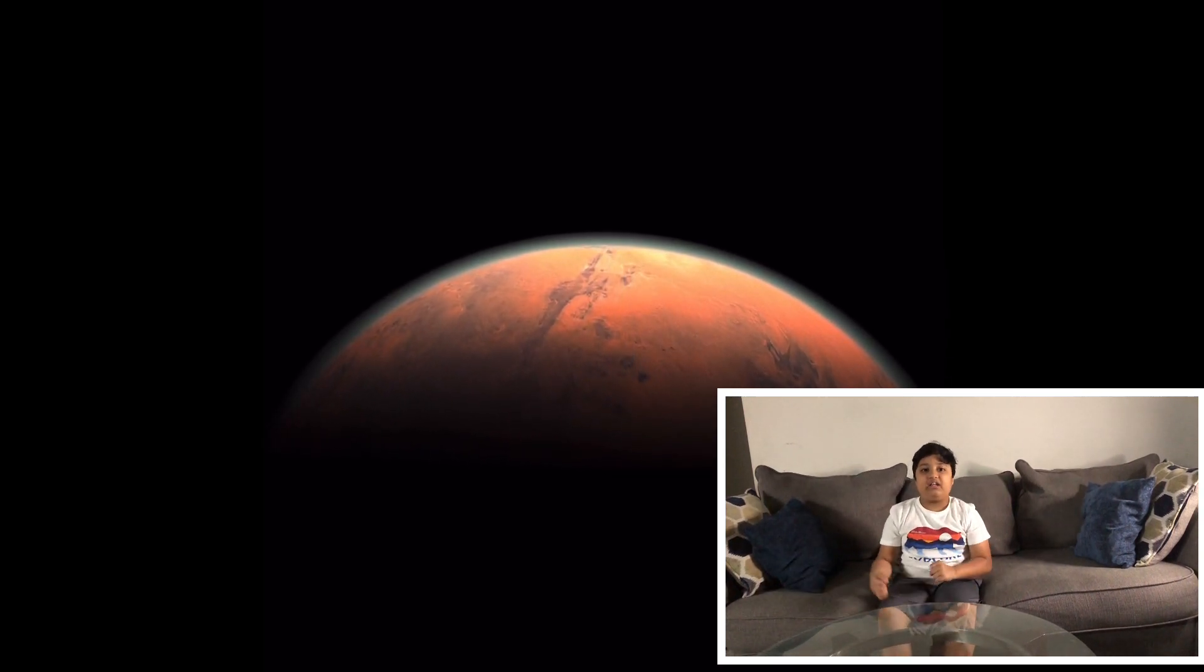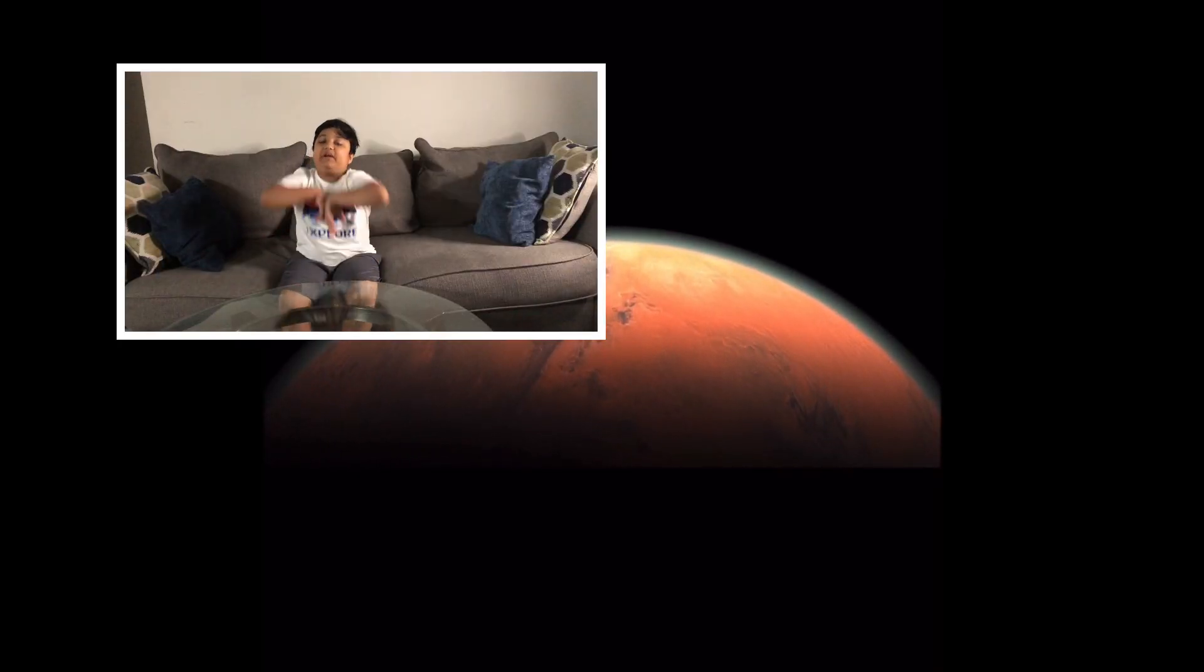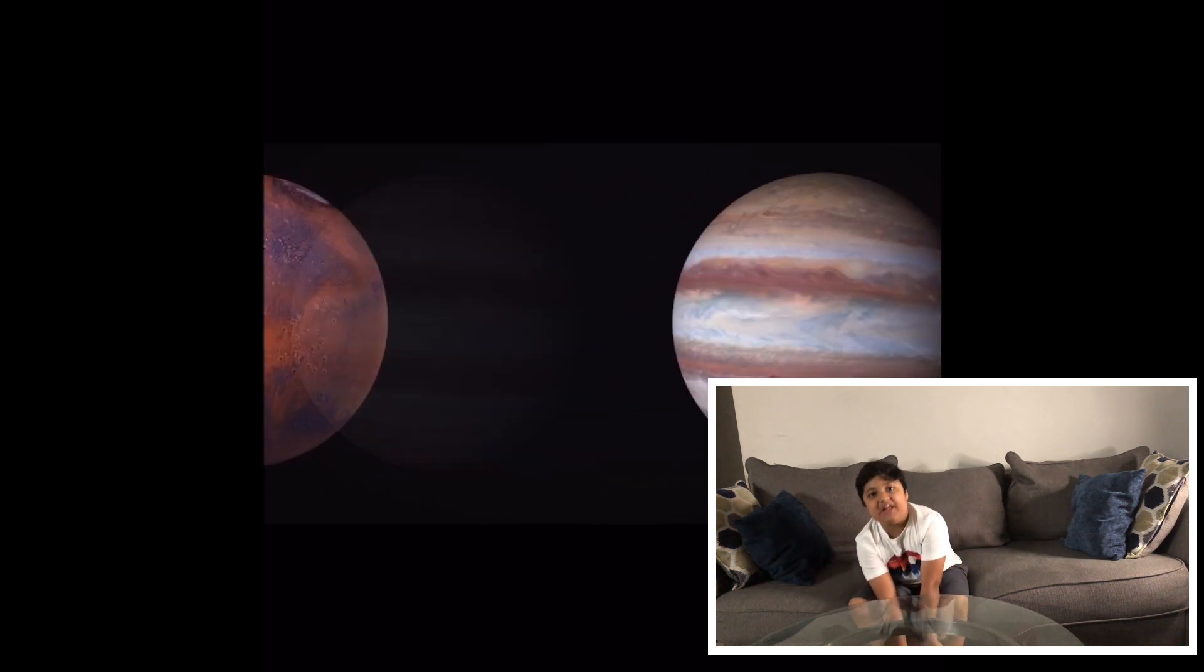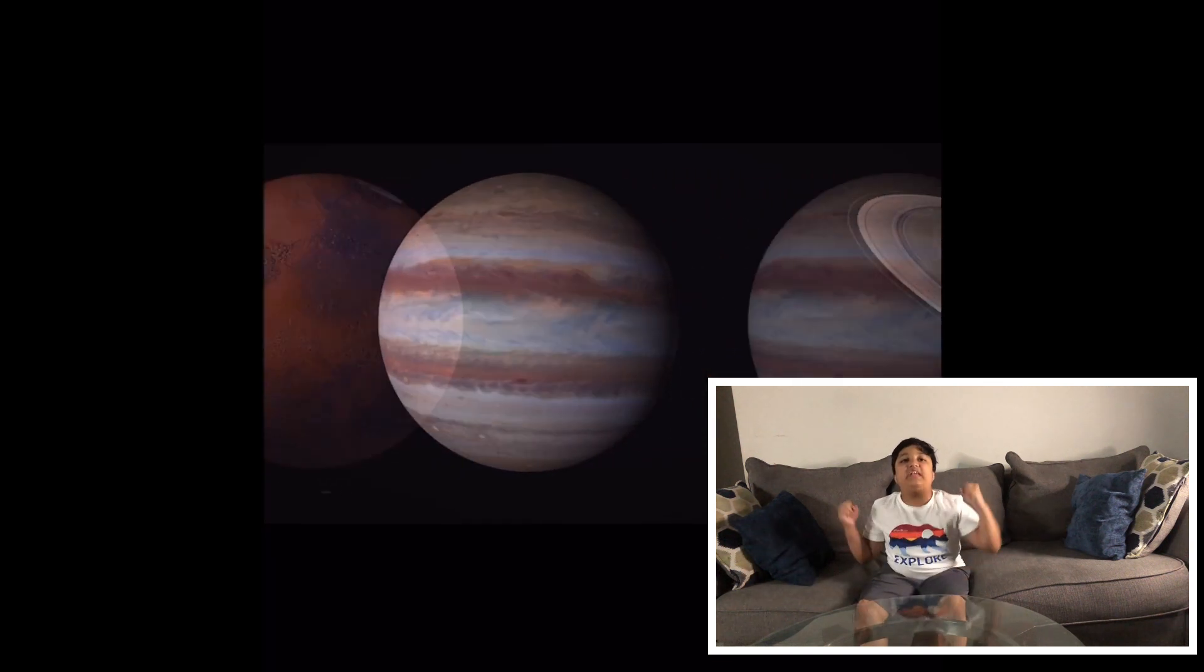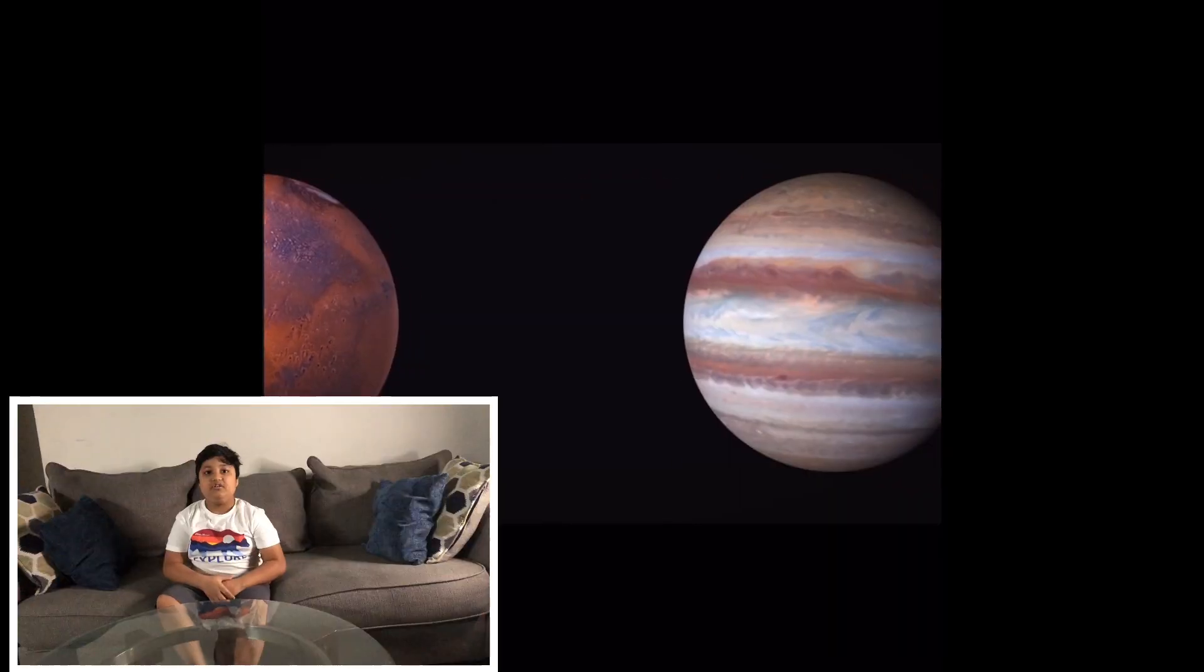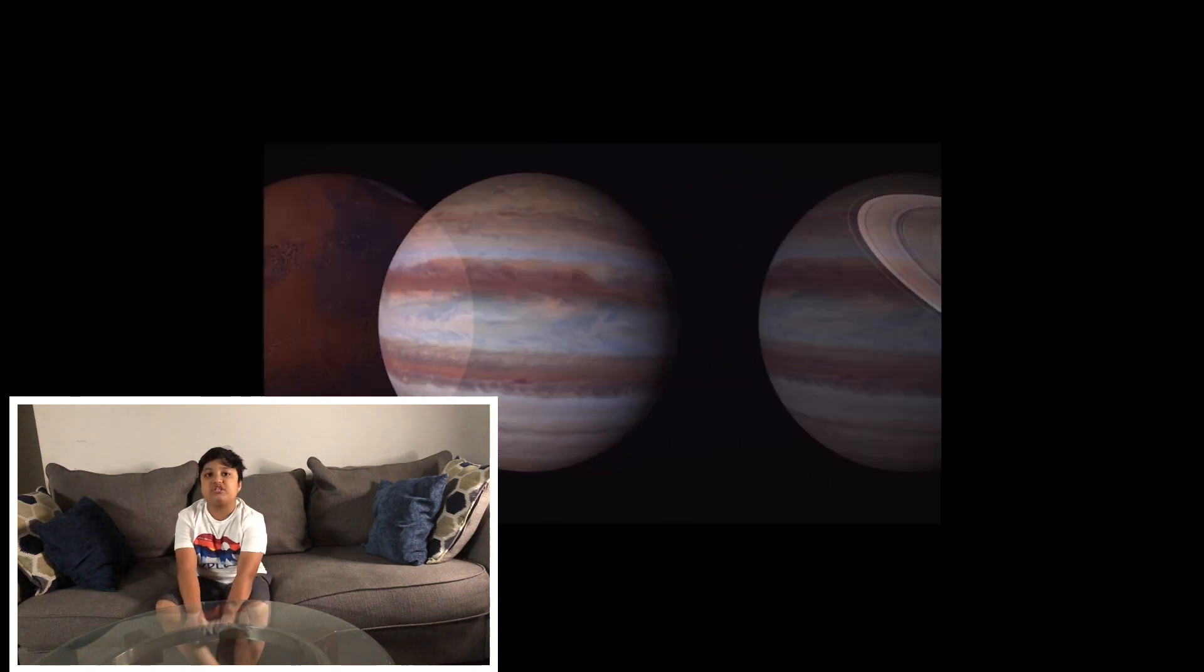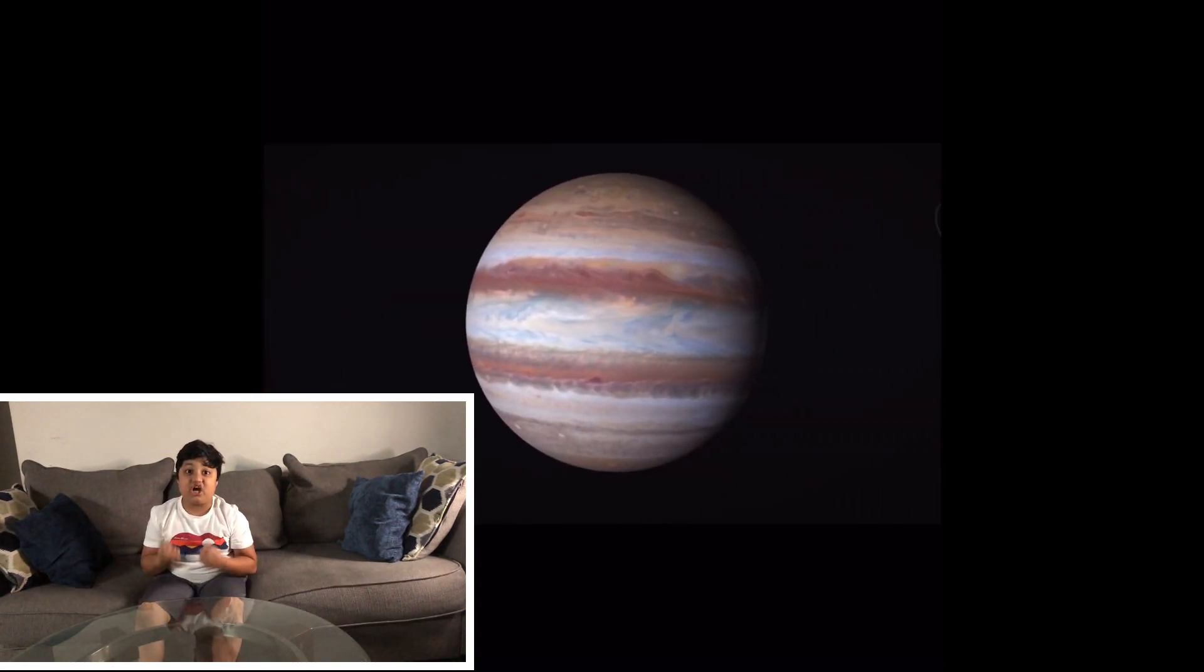Jupiter is the fifth planet from the Sun and it is made of gas and it's humongous. Thousands of us could fit in Jupiter. Jupiter is the largest planet in our solar system. Jupiter is called a gas giant. It's really big and made mostly of gases. Jupiter is also the third brightest planet.